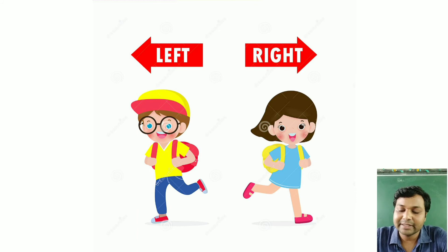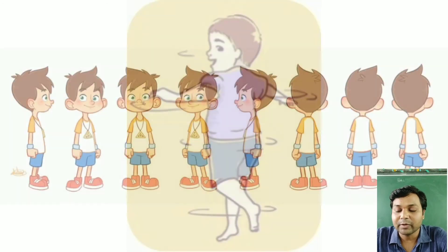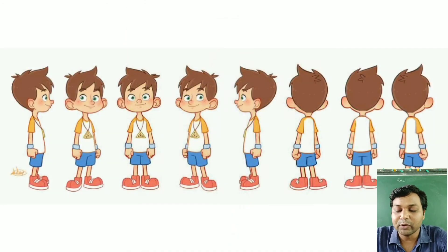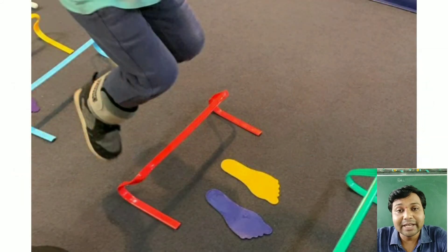Turn right — aapko apne right side mein turn hona hai, mur jana hai. Turn around — abhi aapko apne chaaro taraf ghoom ghoom ghoomna hai. Jump on the spot — ek jagah par kudna hai.